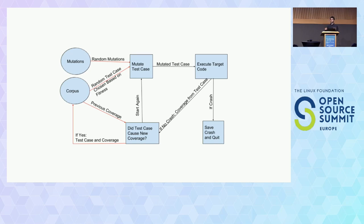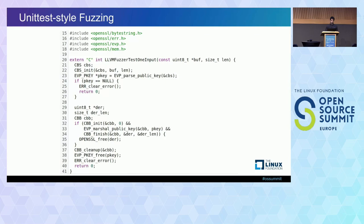This process is sometimes called evolutionary coverage-guided fuzzing, because it's evolving more interesting test cases. Another tool that made it easy for developers to write their own fuzzers was libfuzzer.